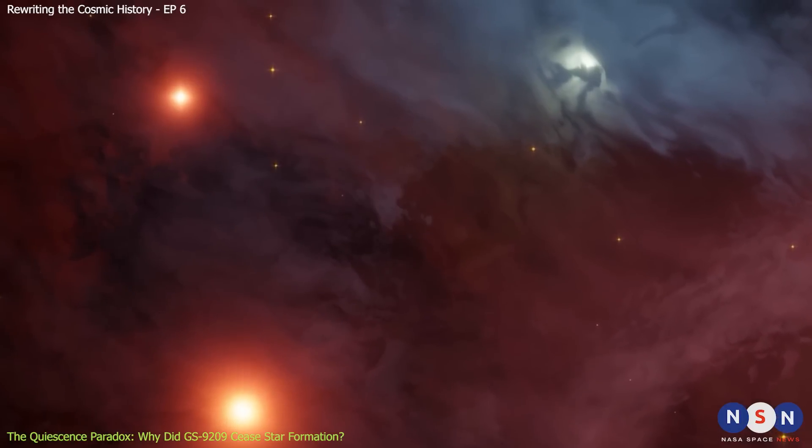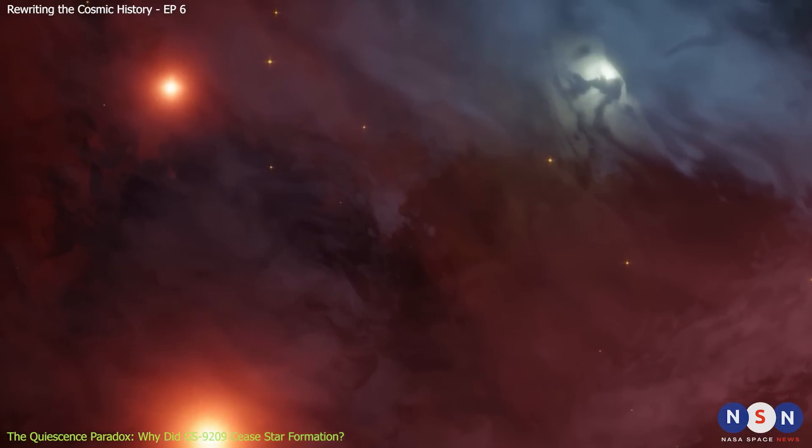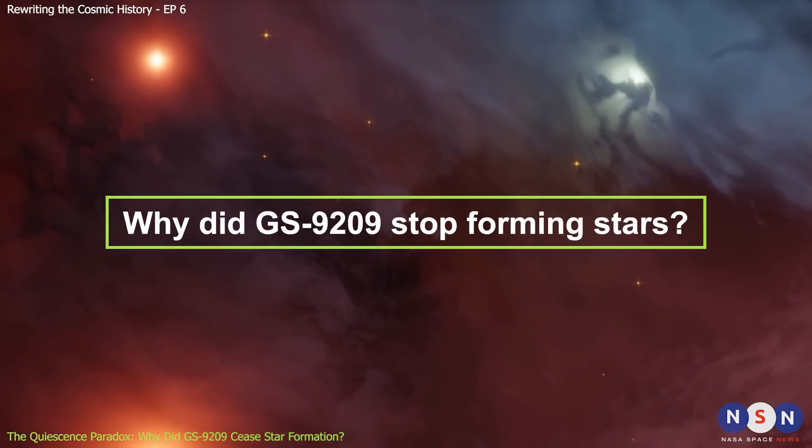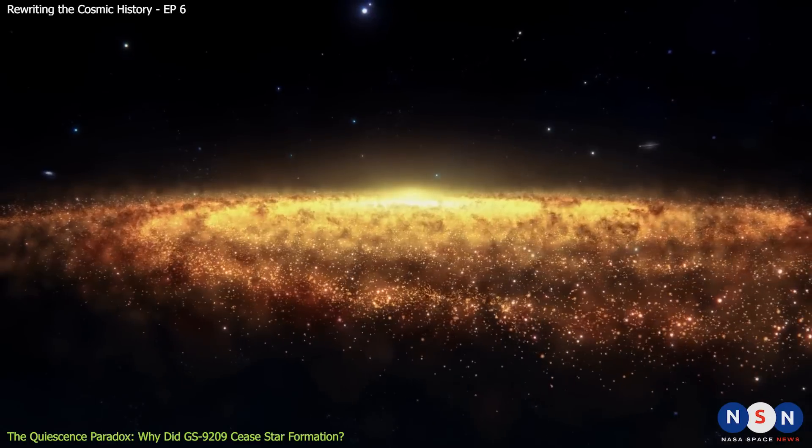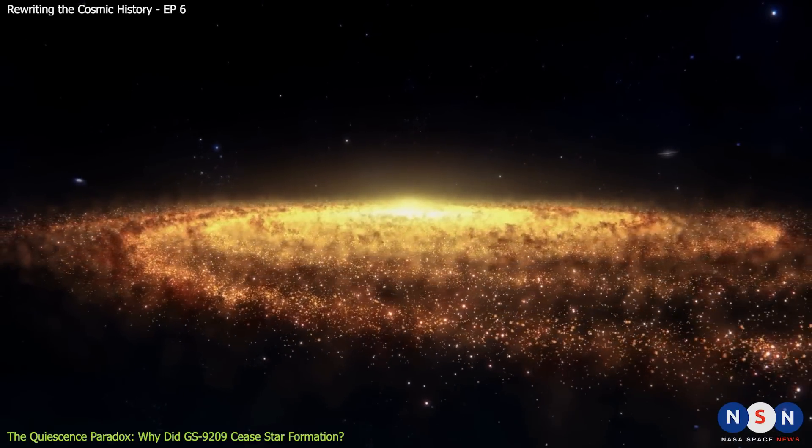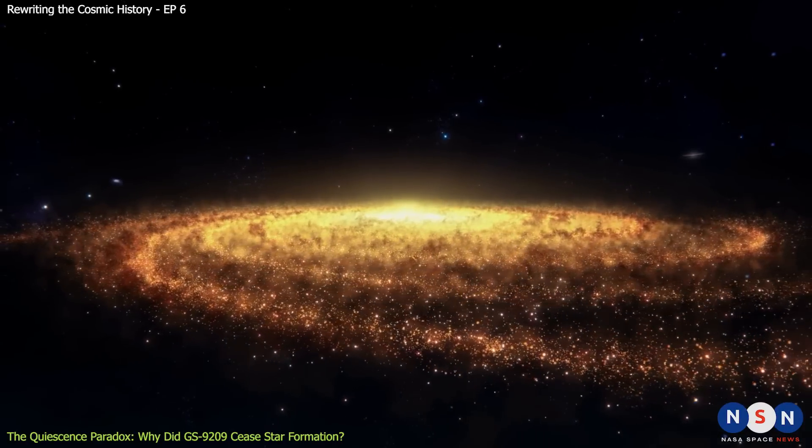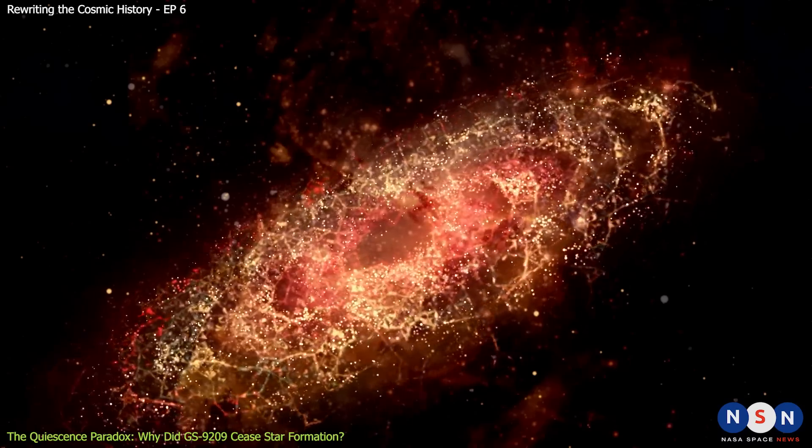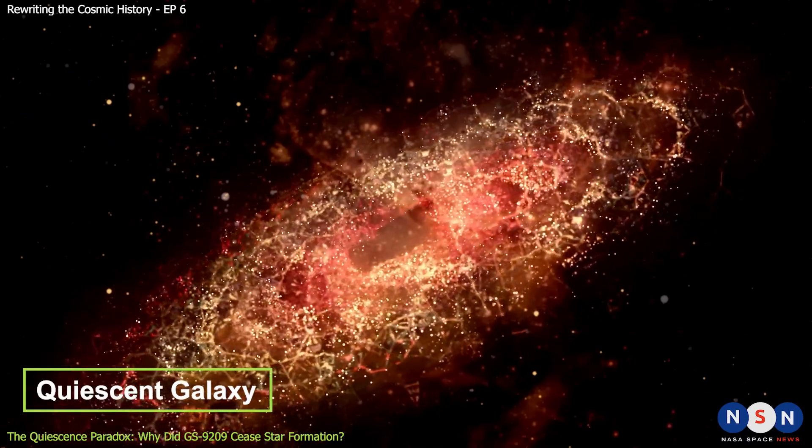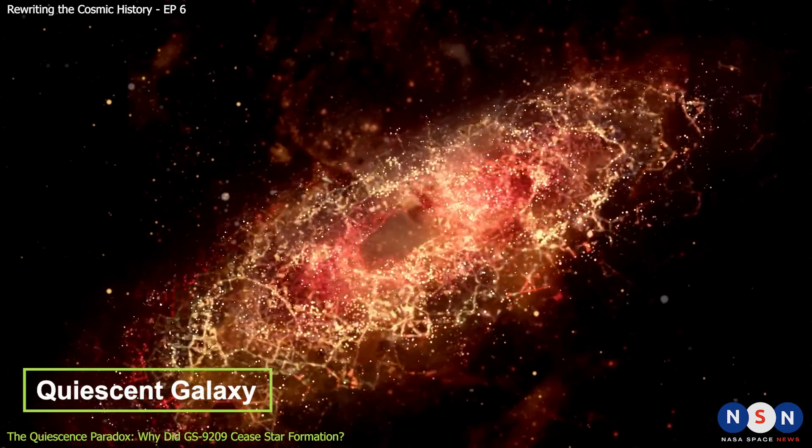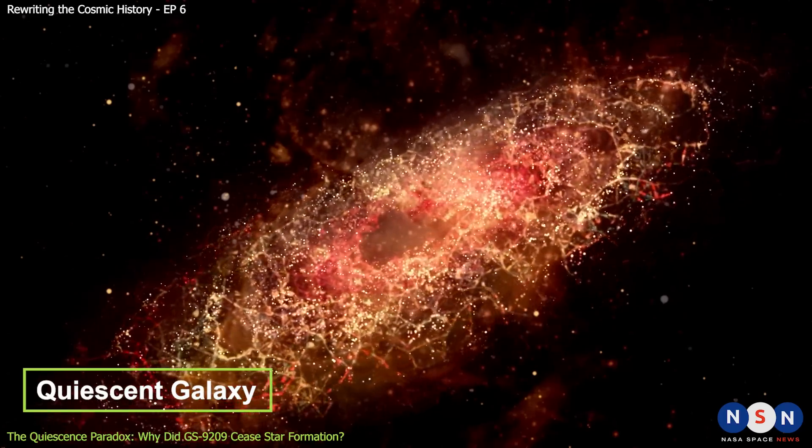Another enigmatic puzzle presented by this galaxy revolves around the question of why did it stop forming stars? Yes, you heard that right. GS 9209 stopped forming stars about half a billion years before we observed it with James Webb. This means that GS 9209 is a quiescent galaxy, a galaxy that no longer forms stars.